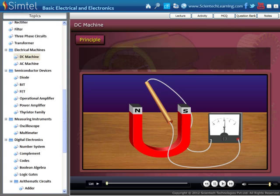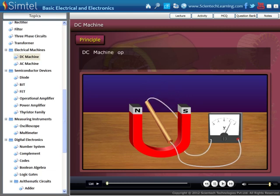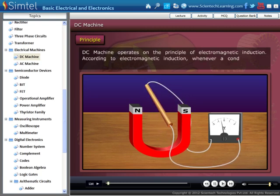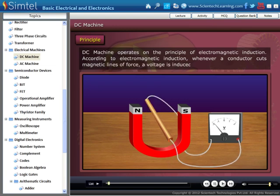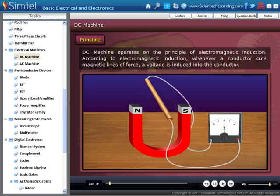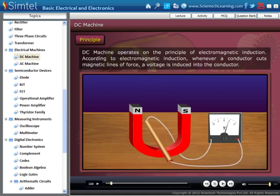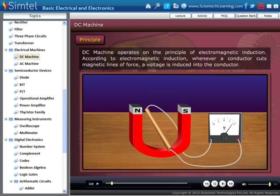Now we study principles of DC machine. DC machine operates on the principle of electromagnetic induction. According to electromagnetic induction, whenever a conductor cuts through magnetic lines of force, a voltage is induced into the conductor.